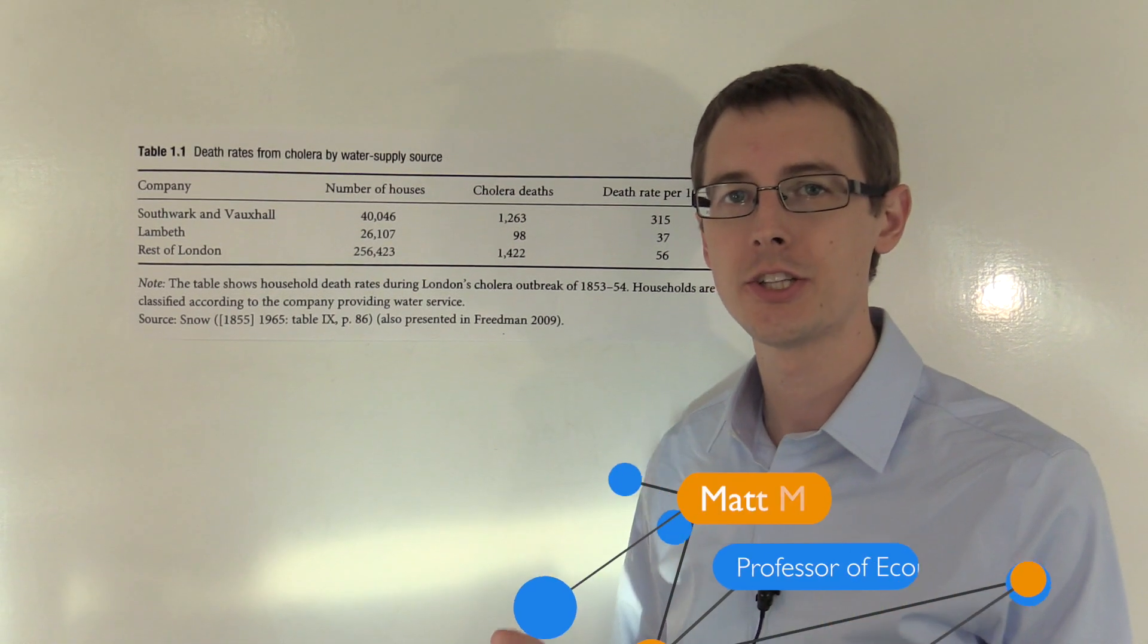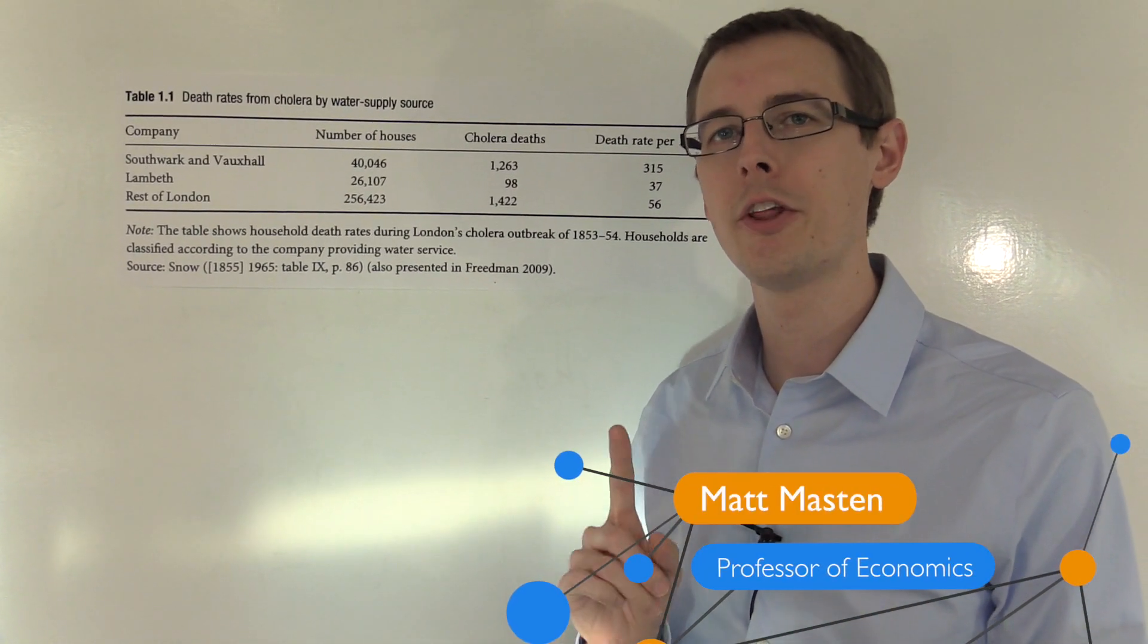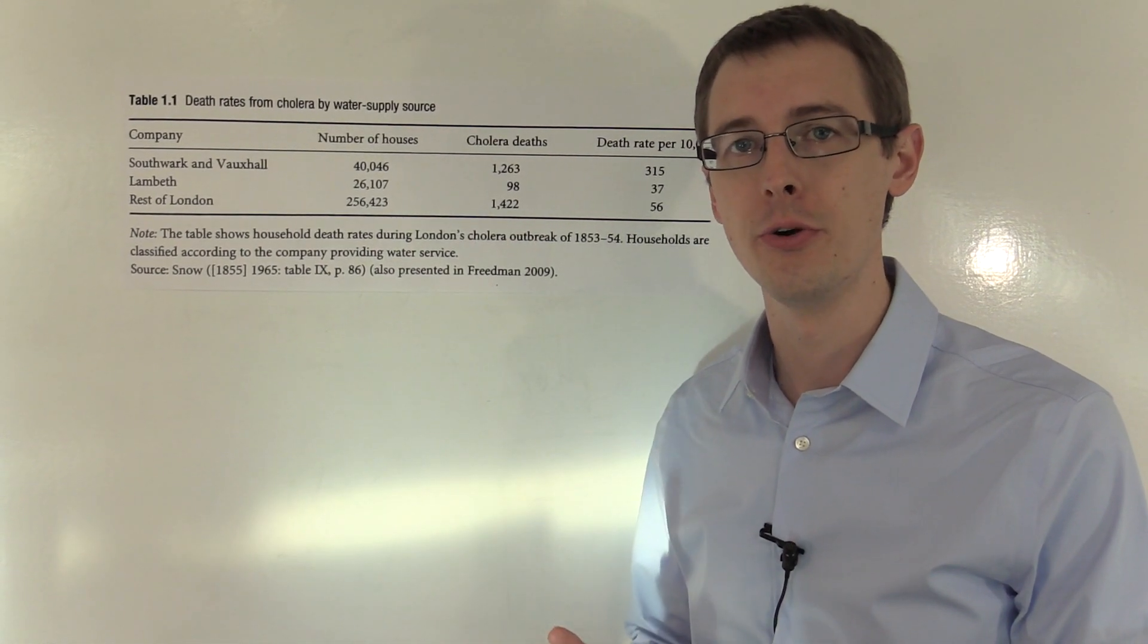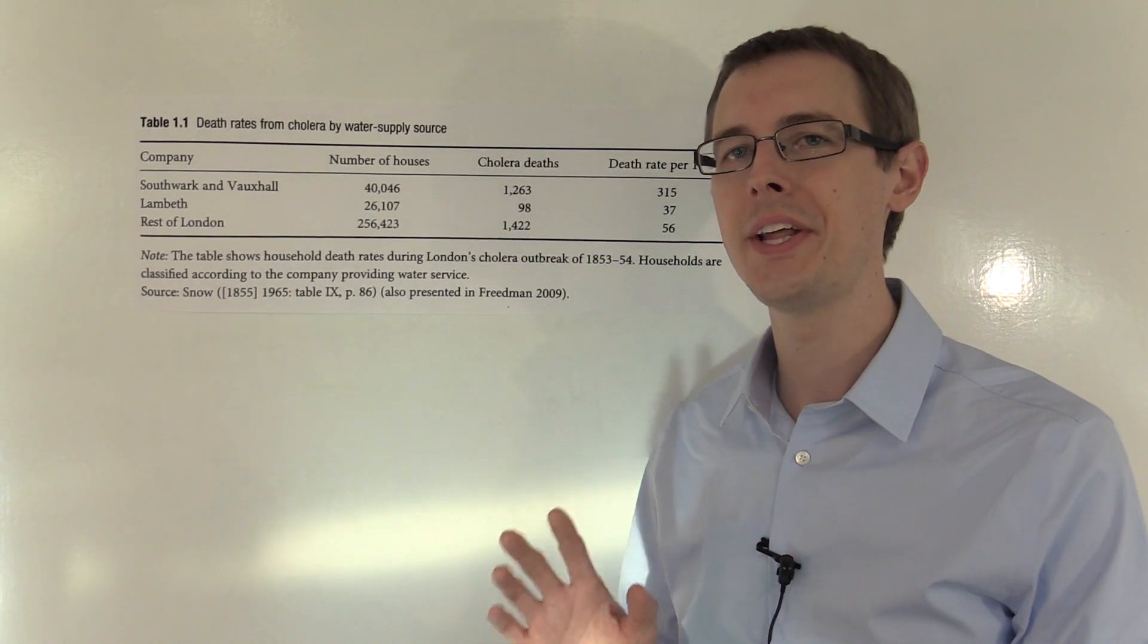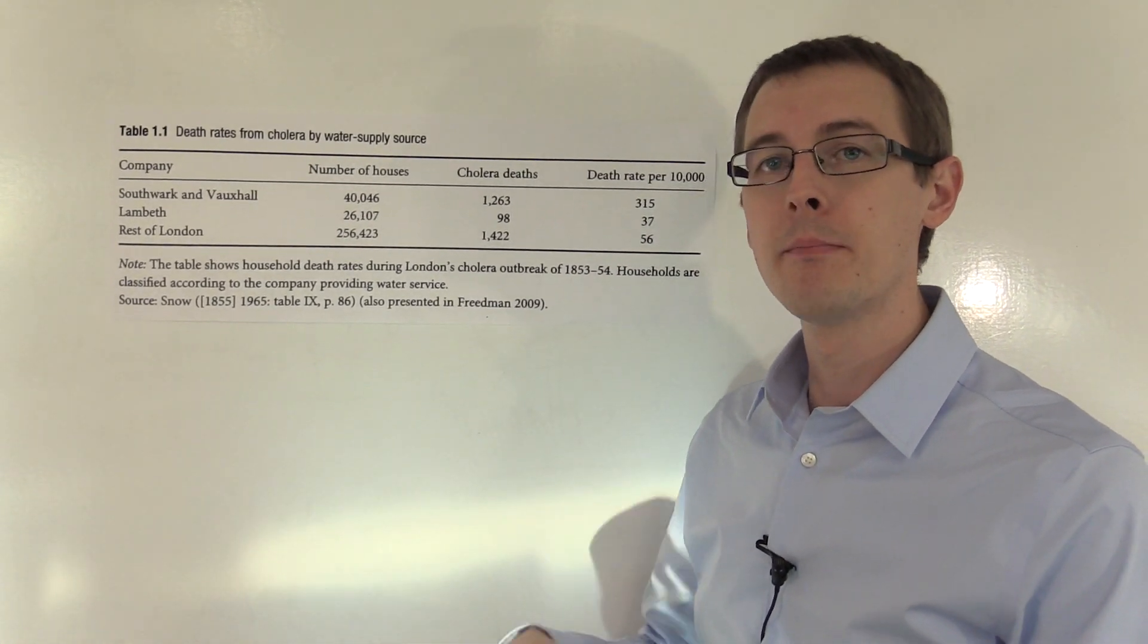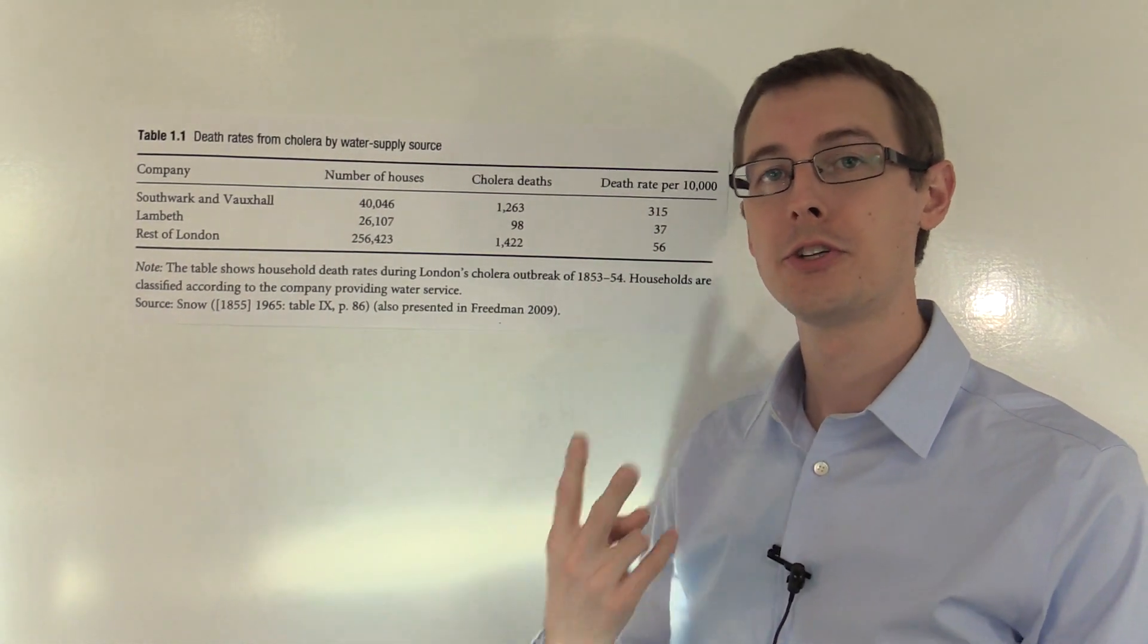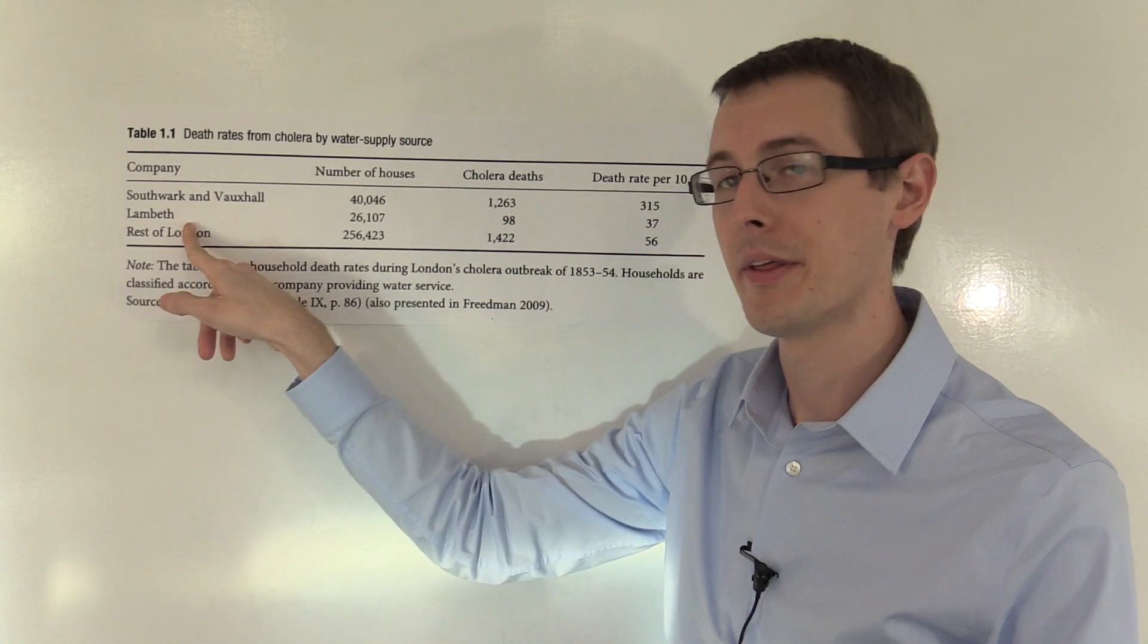In addition to the map that John Snow drew showing the deaths of cholera around Broad Street, he had one other piece of evidence that he used to conclude that cholera is being spread through contaminated water. He had a really nice natural experiment. In London at the time, many households were provided water by two companies, either the Southwark and Vauxhall Company or the Lambeth Company.